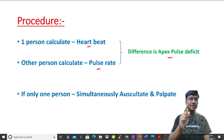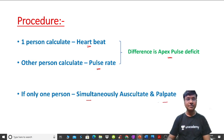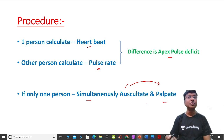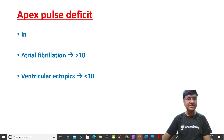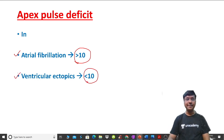If only one person is available, they should simultaneously auscultate and palpate the radial artery. Any heartbeat not transmitted to the radial artery is counted as the apex pulse deficit. If the apex pulse deficit is more than 10, that is suggestive of atrial fibrillation. If it is less than 10, that is suggestive of ventricular ectopics.